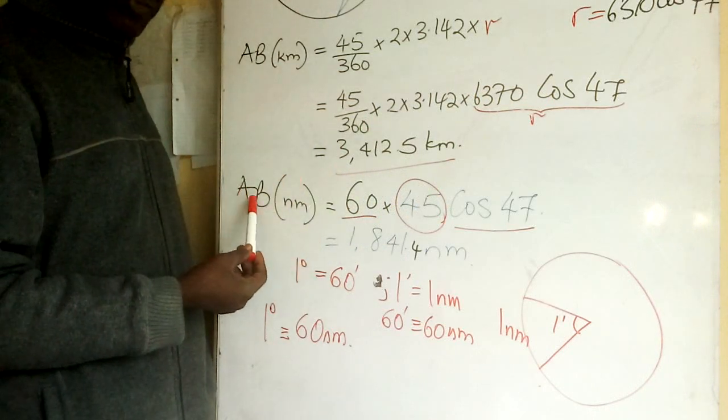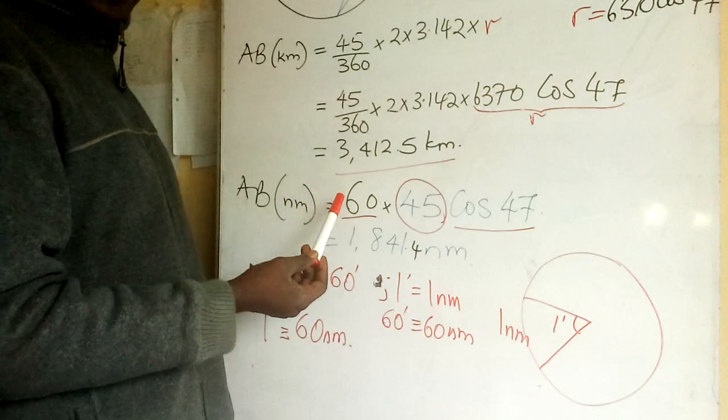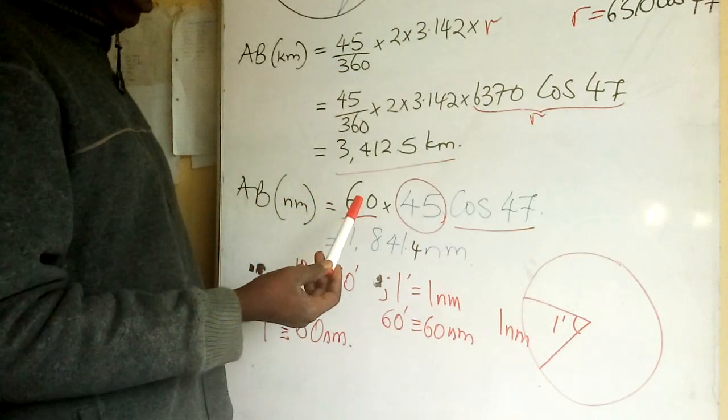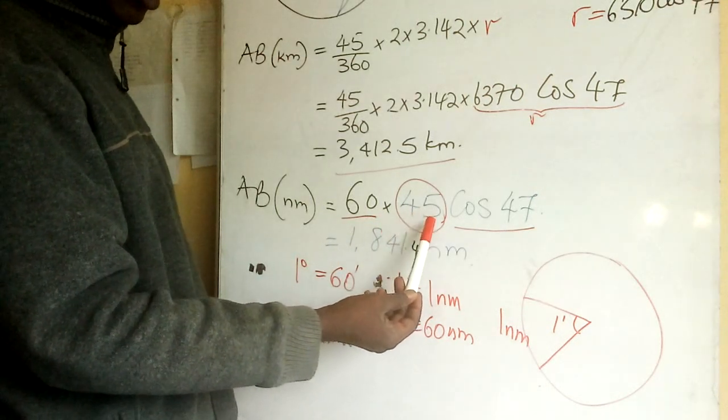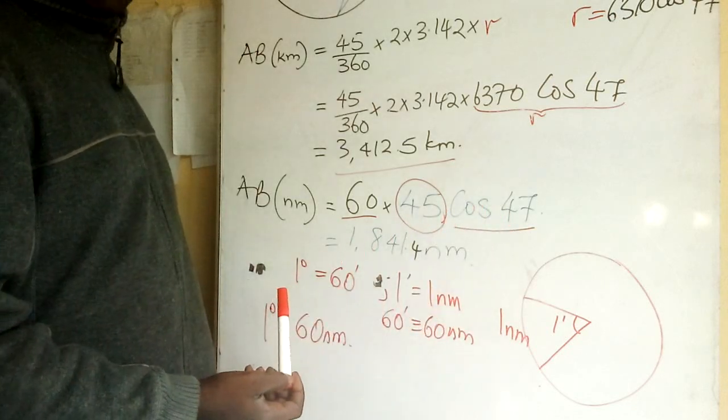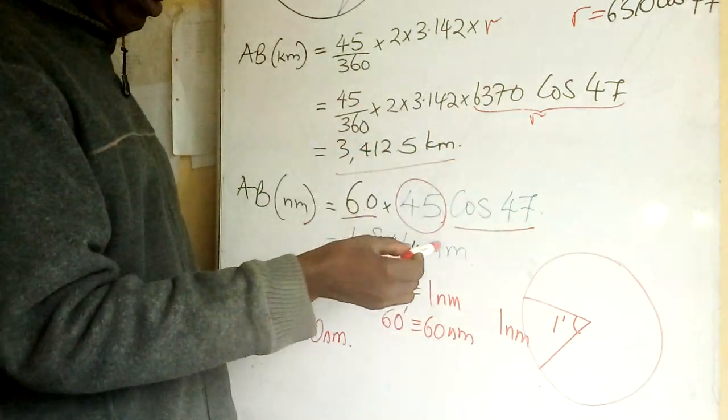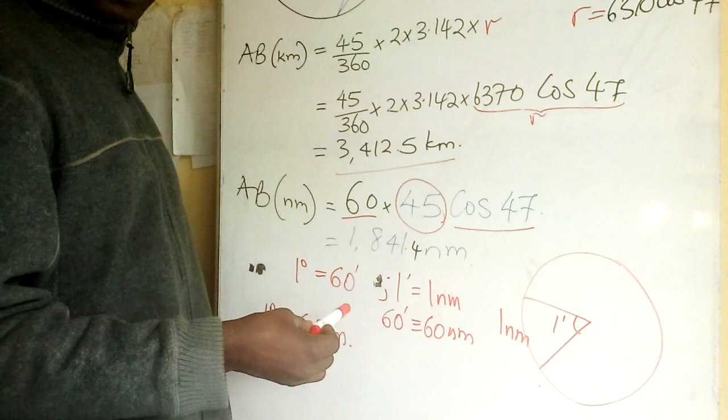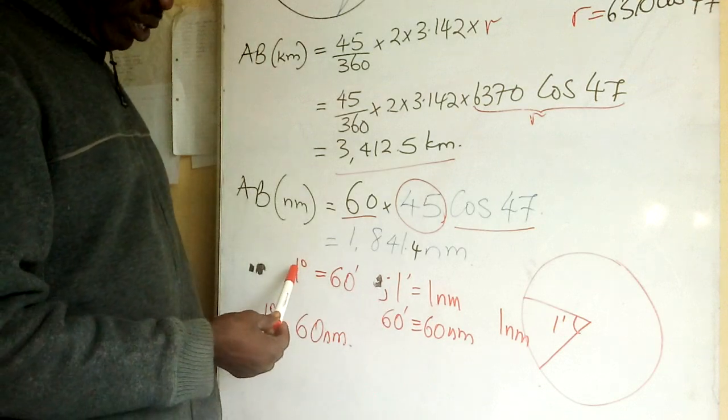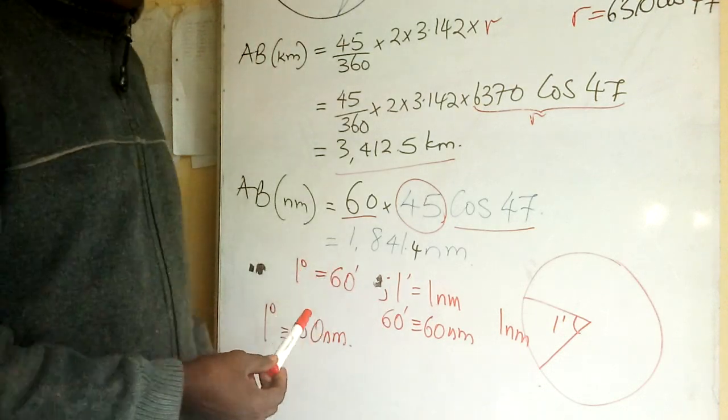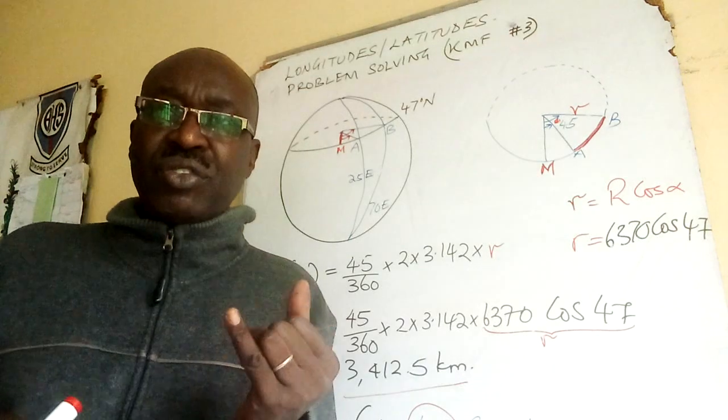Now let us look at AB in nautical miles. What do we do in nautical miles? We write 60 times the angle subtended at the center times cos of latitude. This is a relationship which can be derived. You have to know how it comes about.